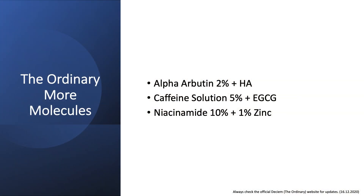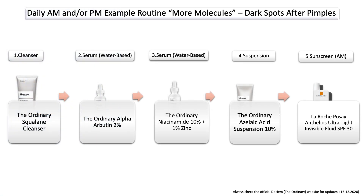I also want to talk about The Ordinary "more molecules," which includes alpha arbutin, the caffeine solution, and niacinamide. This can be a very effective skincare routine if you have dark spots — for example, the redness or red-brownish marks that occur after pimples — to even out your skin tone. You could use your alpha arbutin, your niacinamide, and then the Azelaic Acid Suspension, and if using it in the morning, don't forget your sunscreen, since you don't want to make dark spots worse.